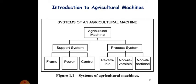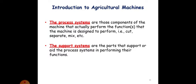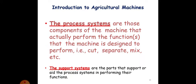Process systems are those components that the machines are actually performing the functions that machine is designed to perform, that is cutting, separating, mixing, etc. Then is the support system, in which the parts that support or aid the process system in performing their functions are utilized.